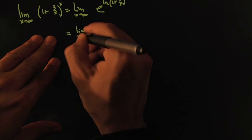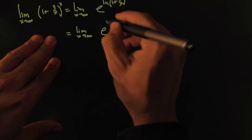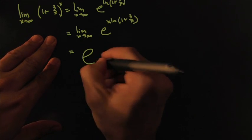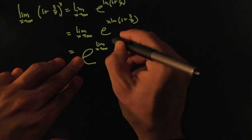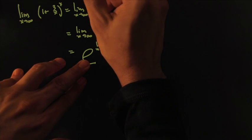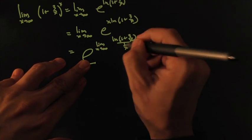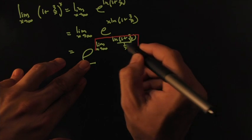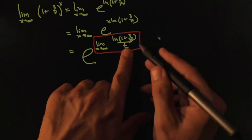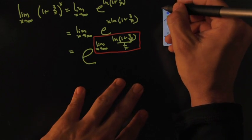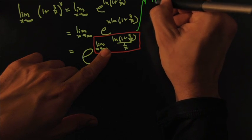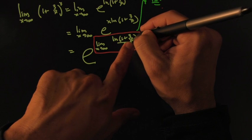I can say this is the limit as x goes towards infinity of e to the x times ln(1 + 3/x). Now I just have to focus on that exponent. I can focus on that limit, and when I find that limit I can come back and plug it in. I'm going to go with green. So I'm going to focus on that limit.